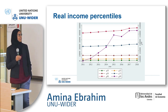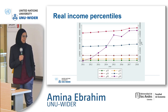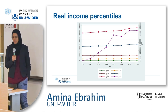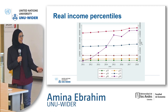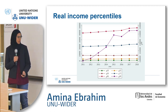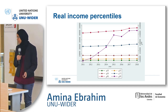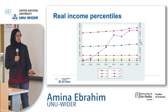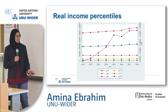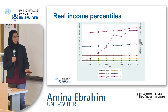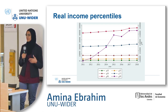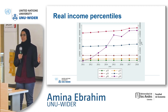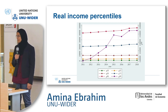Here is real income by percentile — the 10th, 25th, 50th, 75th, 90th, and 99th. All except the 99th are on the same axis. For the period we're looking at, we're not seeing much income growth; it's quite flat up to around the 75th percentile, where it starts to rise. The scale is different for the 99th percentile, but you can see income growth right at the top — this is consistent with earlier research on South Africa.